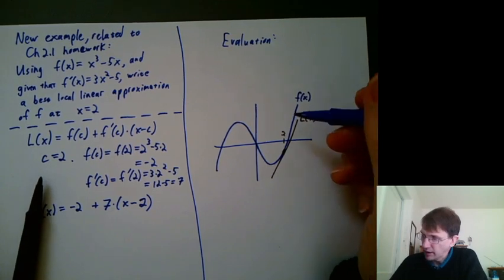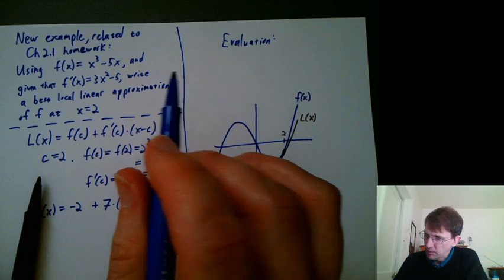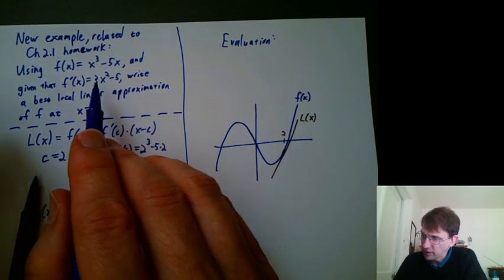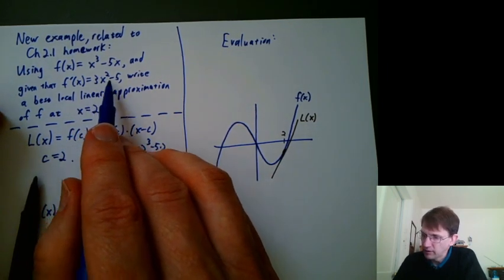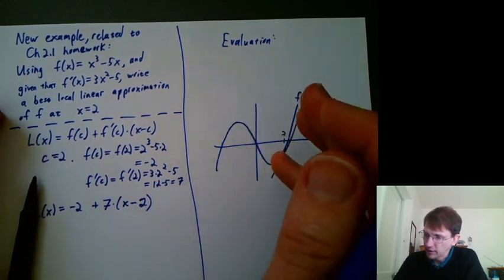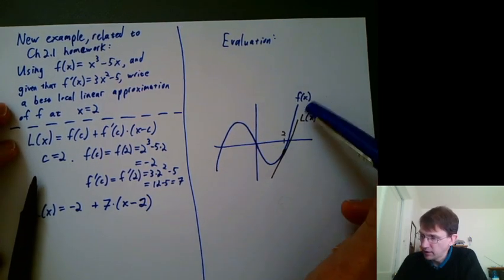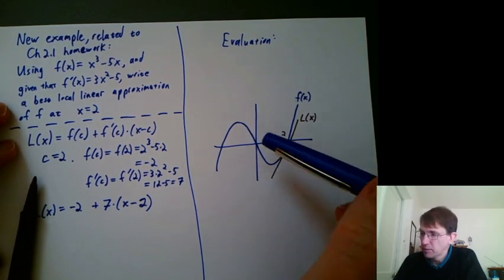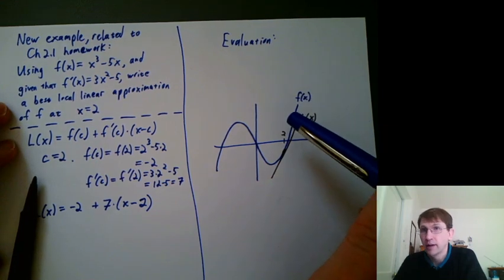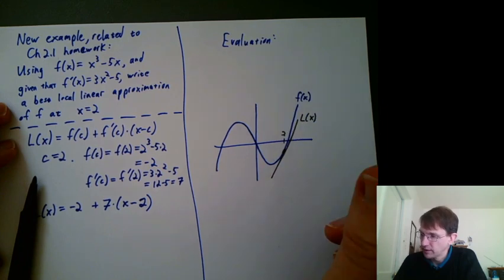One thing to notice here, I didn't plot the derivative function that I was given, because in this problem, I'm not really interested in what that derivative function looks like. And it would just kind of get me confused with everything else. So usually we either plot the function and a tangent line, or we plot the function and its derivative but not the tangent line.